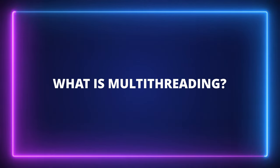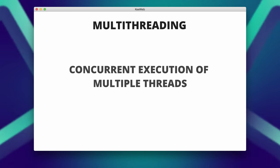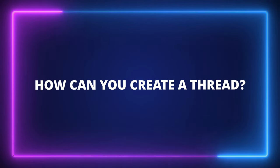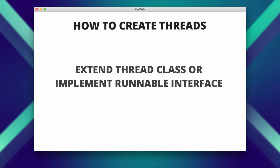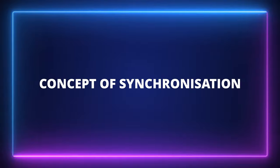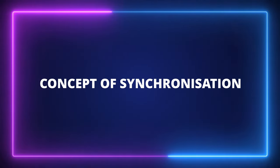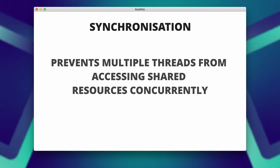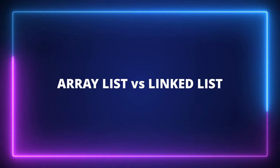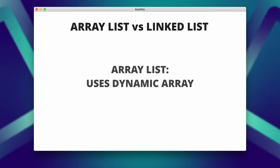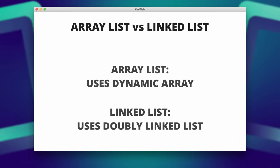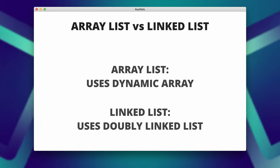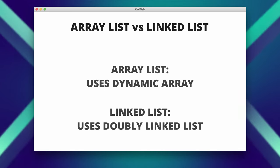What is multi-threading? Multi-threading is the concurrent execution of multiple threads, allowing for better resource utilization. Threads can be created by extending the Thread class or implementing the Runnable interface. Synchronization prevents multiple threads from accessing shared resources simultaneously, avoiding data inconsistency issues. What is the difference between ArrayList and LinkedList? ArrayList uses a dynamic array while LinkedList uses a doubly linked list. ArrayList is better for random access, while LinkedList is efficient for frequent insertions and deletions.